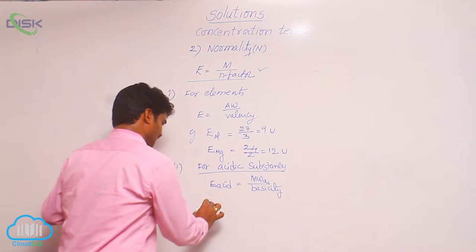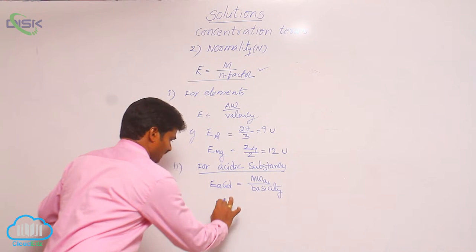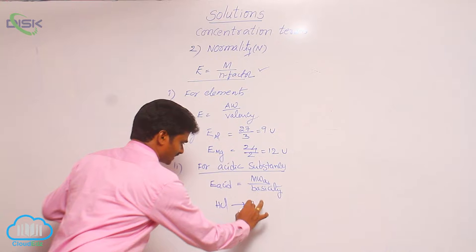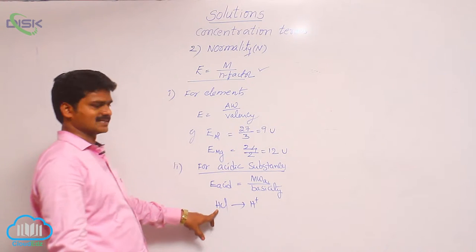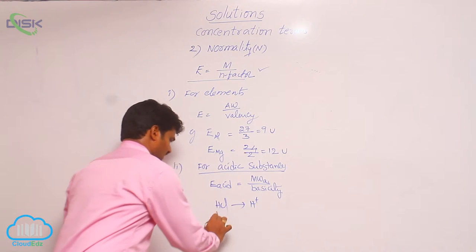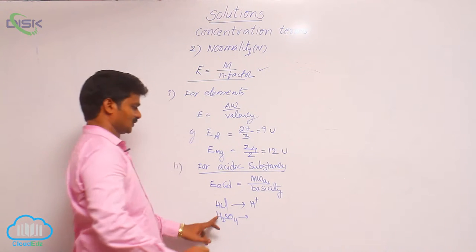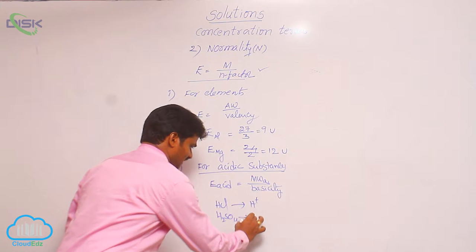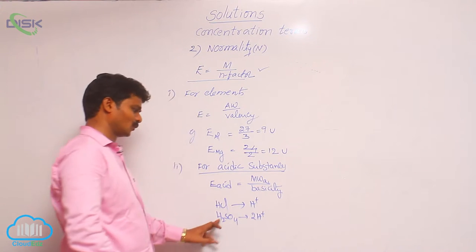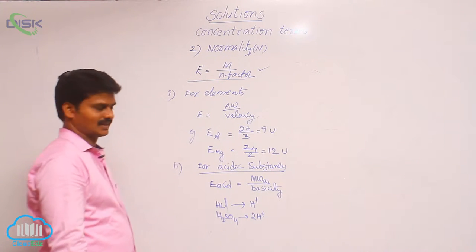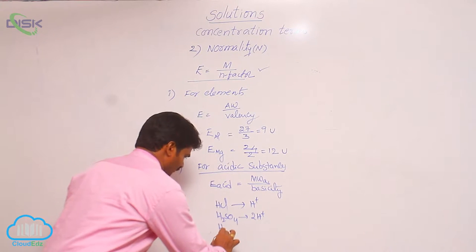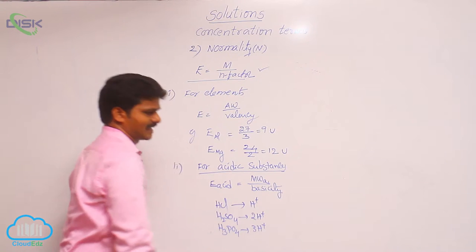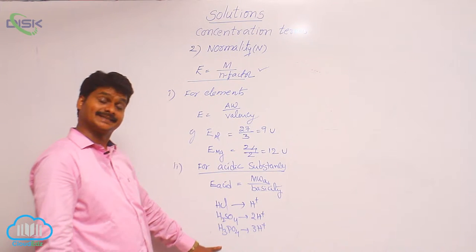For example, HCl is an acid; it can give 1 H⁺ ion, so its basicity is 1. H2SO4 can give 2 H⁺ ions, so its basicity is 2 — it can give 2 H⁺ ions, that is why. Similarly, for H3PO4 it can give 3 H⁺ ions in its reaction, that is why its basicity is 3.